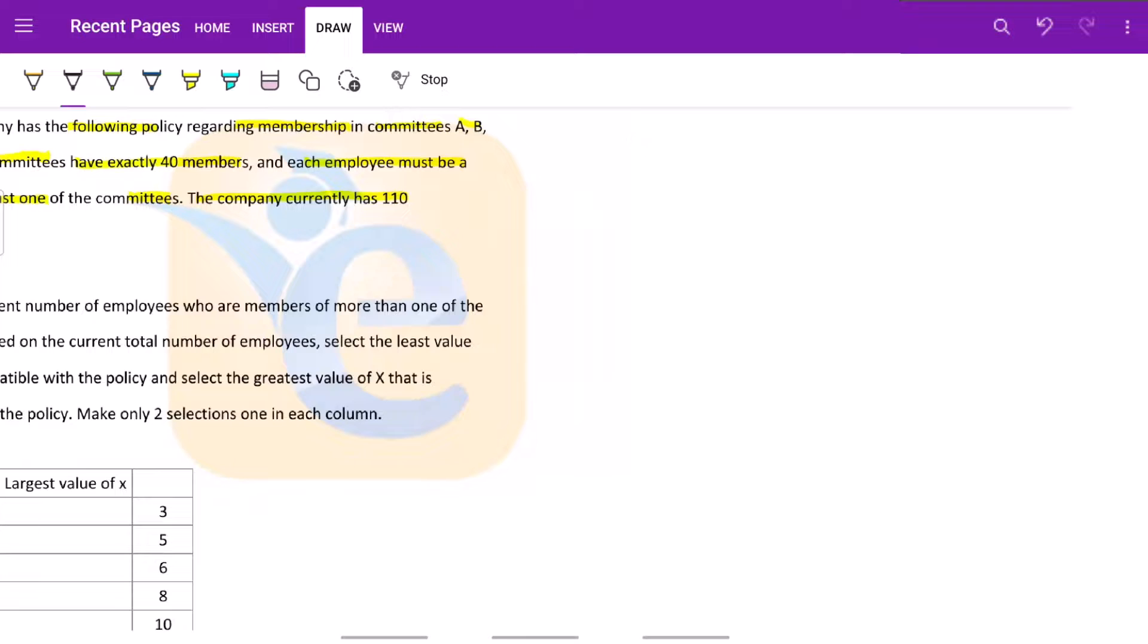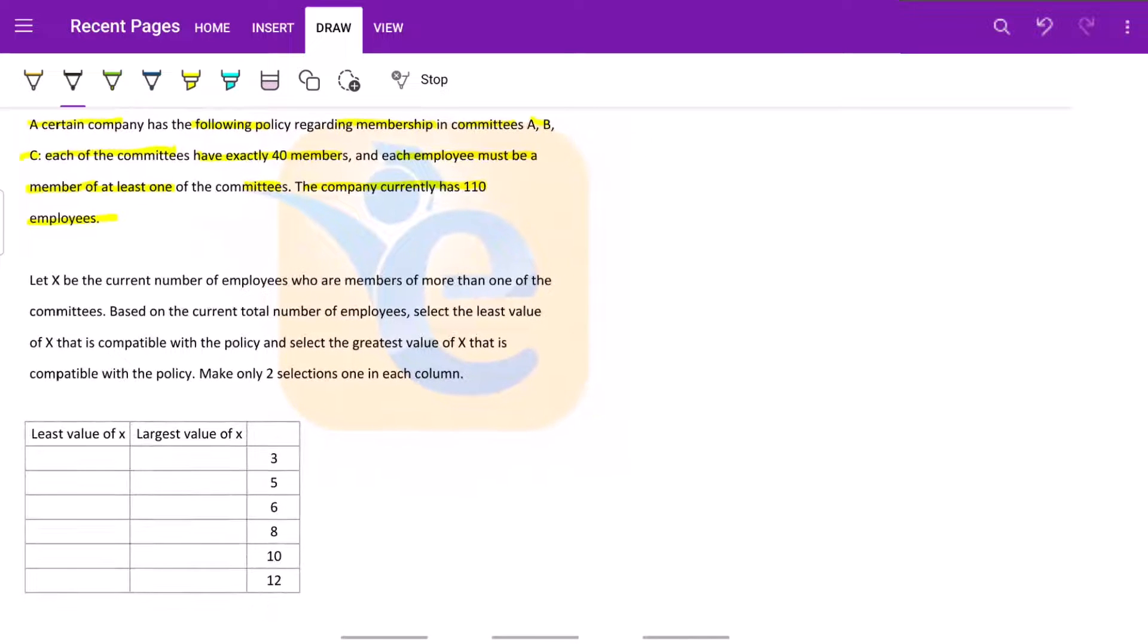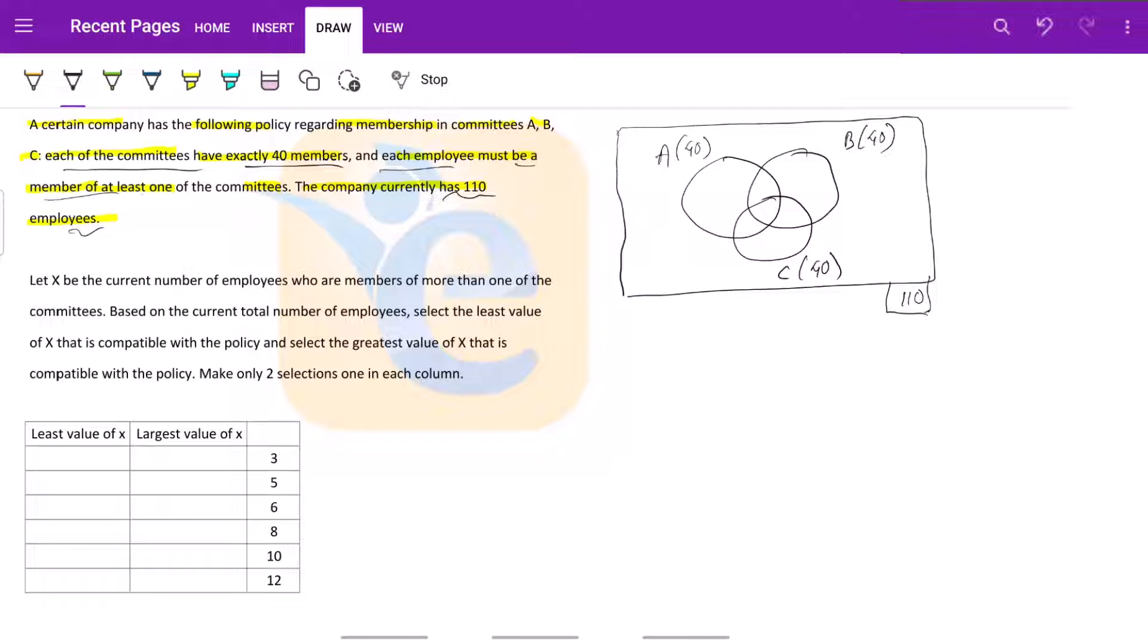So let us put this in the form of a Venn diagram first of all. So basically we have three committees. We have a company with 110 employees. So this is 110, and these are our various committees A, B and C. Each of the committees have exactly 40 members. So this should be 40, 40, 40 alright, and each employee must be a member of at least one of the committees.